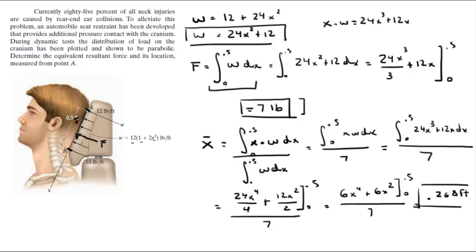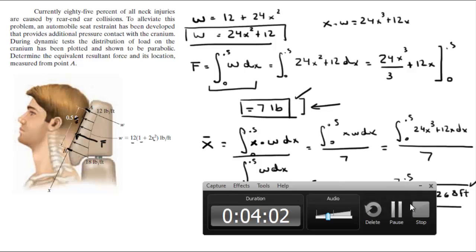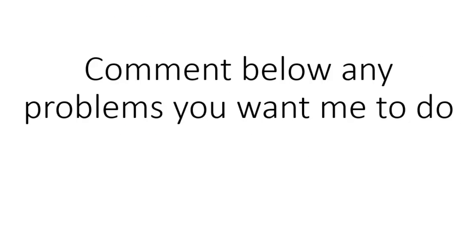So this whole loading can be replaced by an equivalent resultant force: the force equals 7 pounds, and the distance x-bar from A equals 0.268 feet — that's the final answer. Please comment below if you want me to do any problems and I'll be happy to help, thank you.